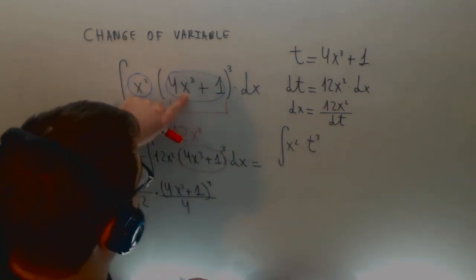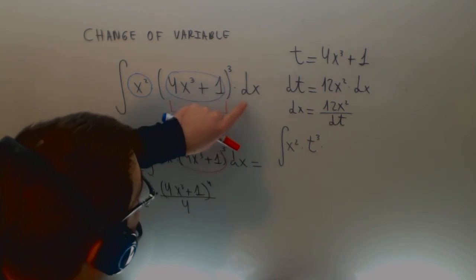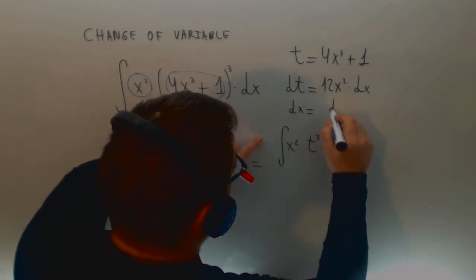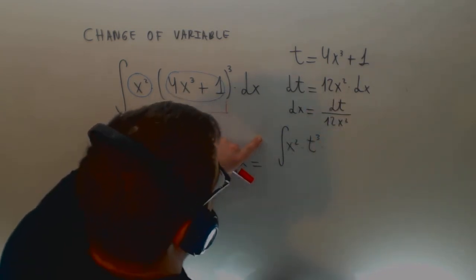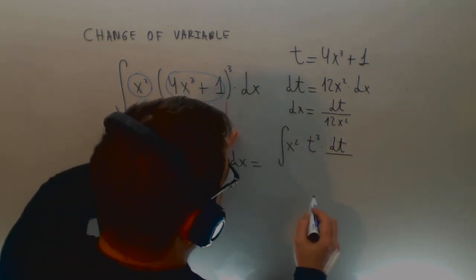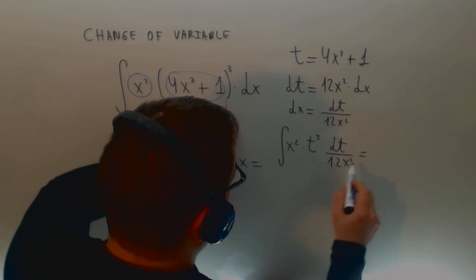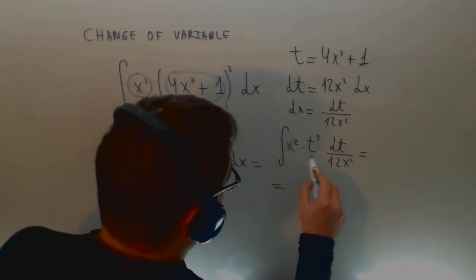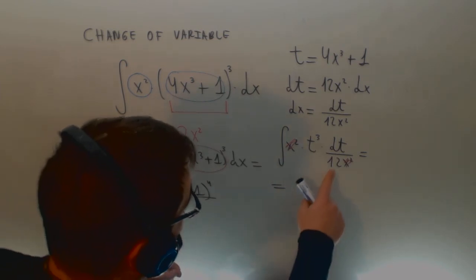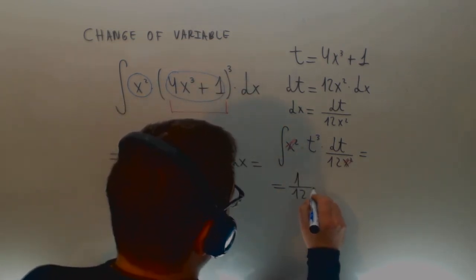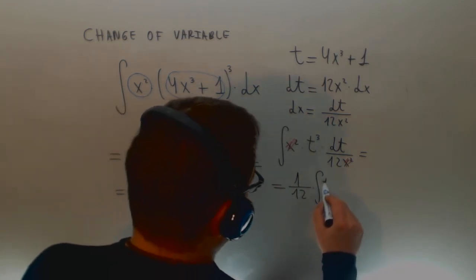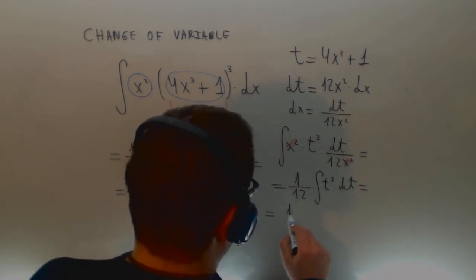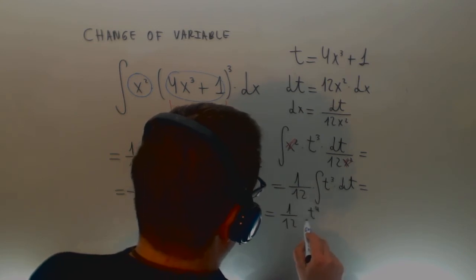Then dx equals dt divided by 12x squared. I substitute here what I know: this is x squared multiplied by t — I change the variable to t raised to 3 — and dx is dt divided by 12x squared. The x squared cancels with x squared, the 12 comes out of the integral, and I get the integral of t³ dt, which equals t⁴ divided by 4.